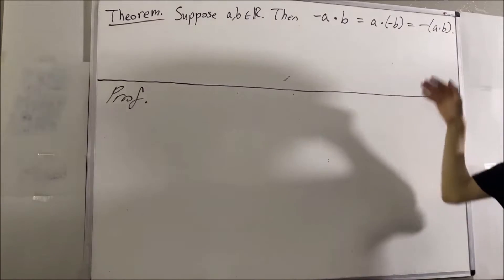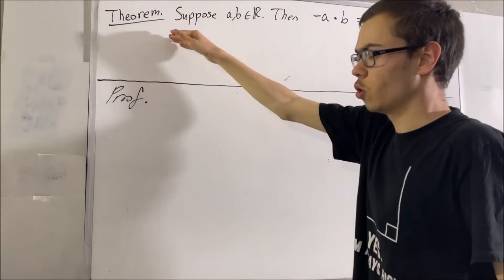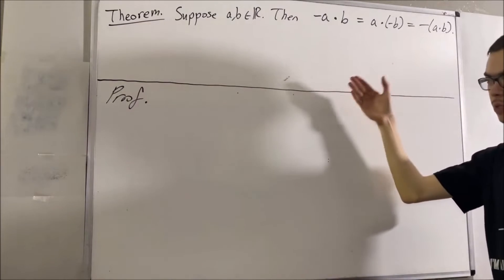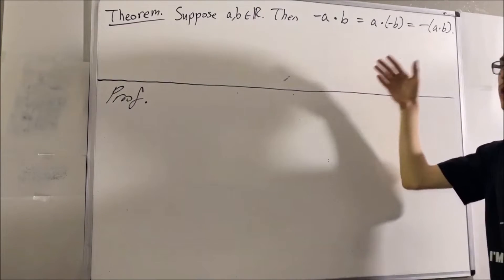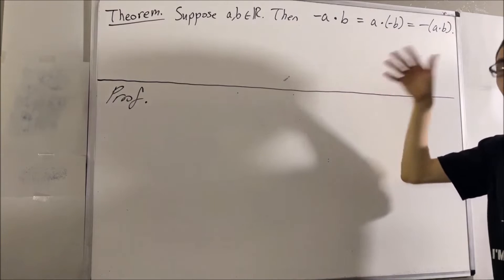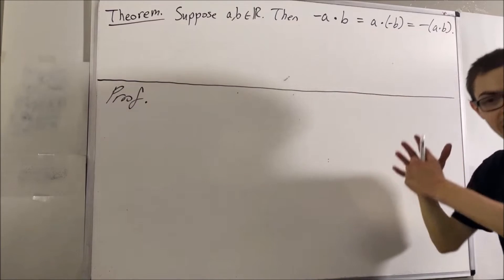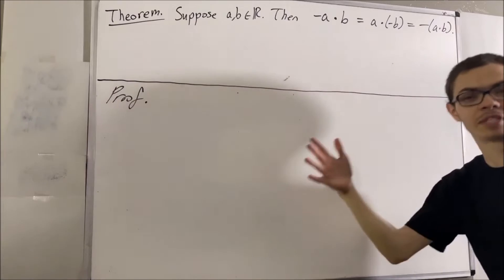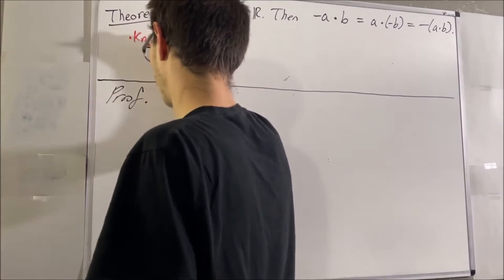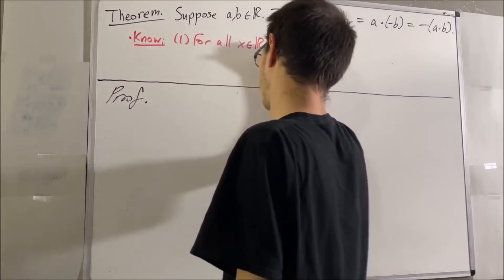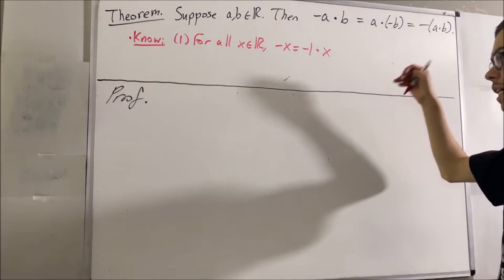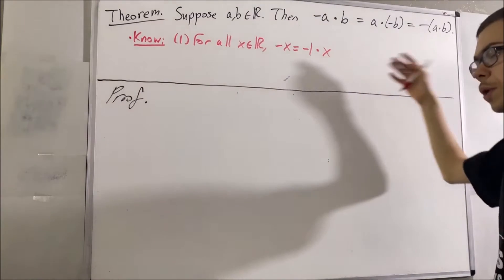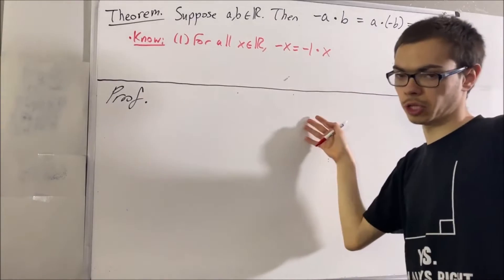Now in proving this theorem, we are going to rely on some facts which come from the field properties of the real numbers. The first is: for every real number X, the negative of X is equal to negative 1 times X. And the second is just the commutative and associative laws, whenever we see them necessary to include in our proof.